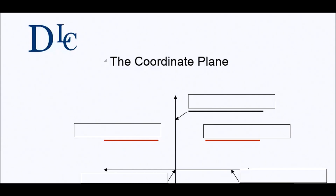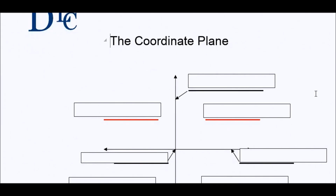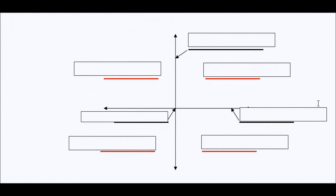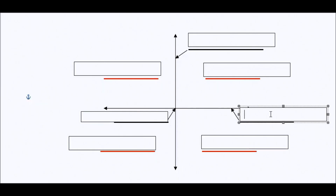So in the coordinate plane, it's a two-dimensional figure and we've got two dimensions. We've got a number line going east and west, right and left, and that number line we call it the x-axis.